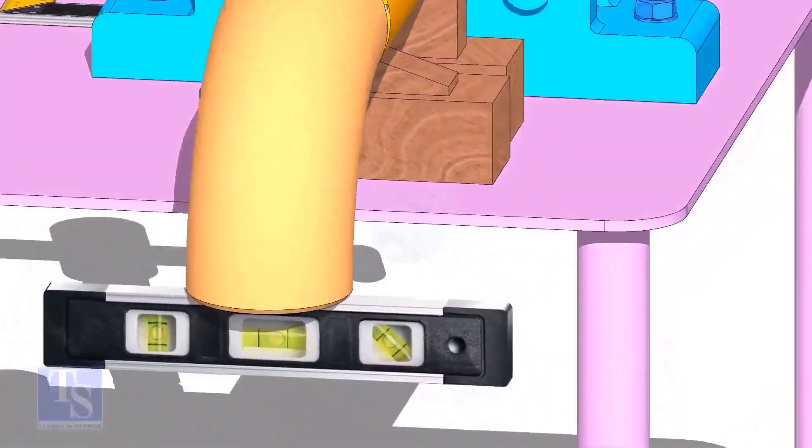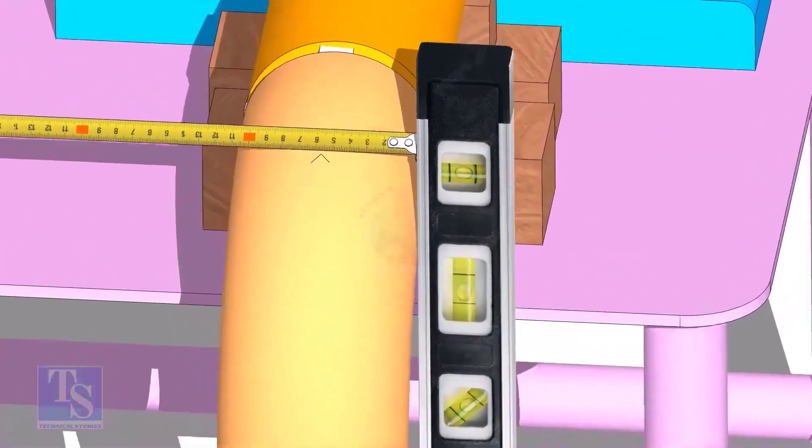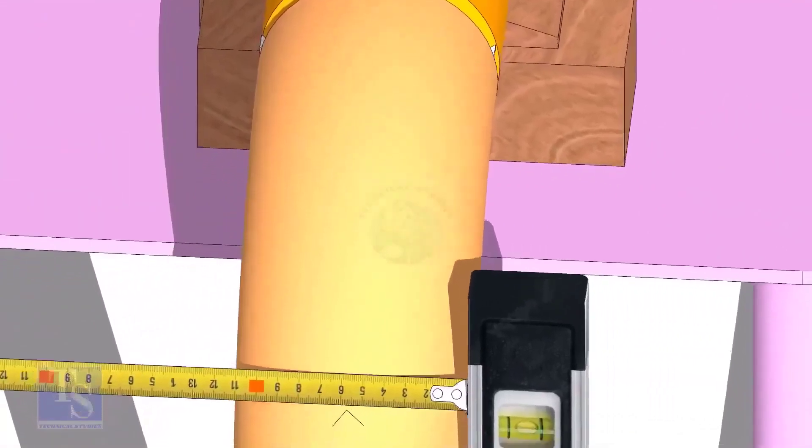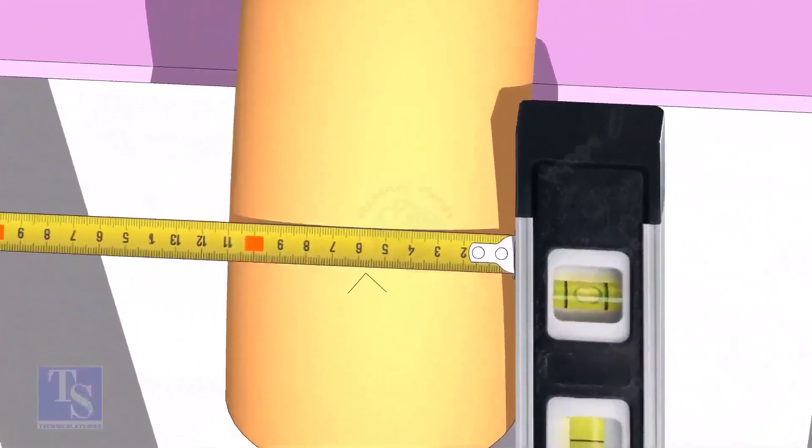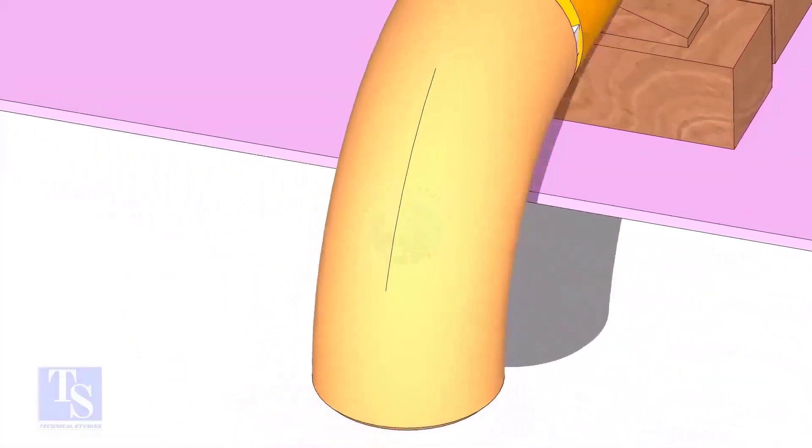Mark the center line of the elbow. OD of a four inch pipe is 114 millimeters. Hold a level bottle at the side of the elbow vertically, and mark 57 millimeters on the elbow at least three locations, as shown. Draw a line connecting these marks.